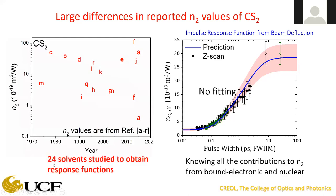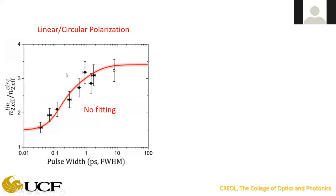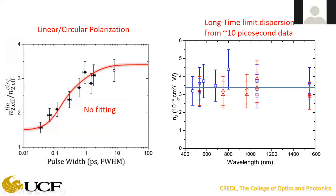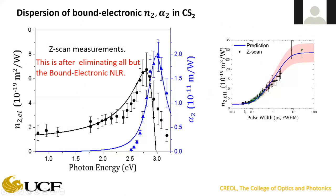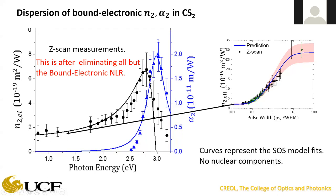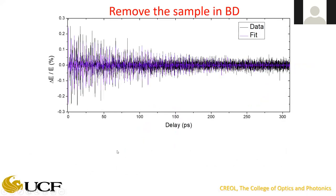A very industrious graduate student did these experiments on 24 different solvents, giving curves for linear and circular polarization with no fitting parameters, confirming no dispersion as predicted. Using really short pulses where you're dominated by the bound electronic response, here's the two-photon absorption turning on at 2.5 eV, and here's the bound-electronic nonlinear refractive index — it goes up, then turns rapidly negative, fitting beautifully to a simple sum-over-states model.